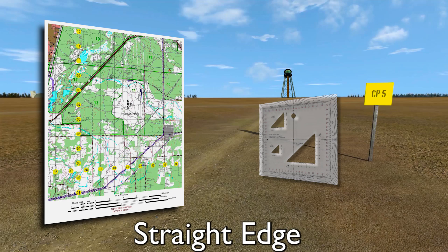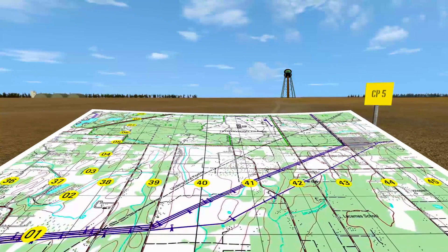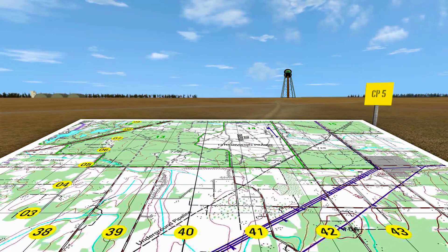The second method of intersection is the straight edge method. Orient your map on a flat surface and mark your position on the map. Draw an intersection line for each of the plotted points.